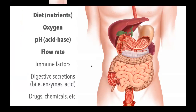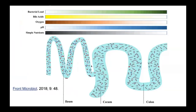A figure from a recent review article summarizes the trend through the GI tract in several key parameters. Generally, bacterial load increases dramatically as we get into the colon — many orders of magnitude in concentration. Bile acids are an important determinant of which microbes can grow, tending to be present in the small intestine and largely reabsorbed in the terminal ileum in a healthy GI tract. Oxygen levels tend to decrease, pH generally decreases in contrasting the stomach and duodenum with the rest of the GI tract, and simple nutrients are mostly available in the small intestine before they're absorbed.